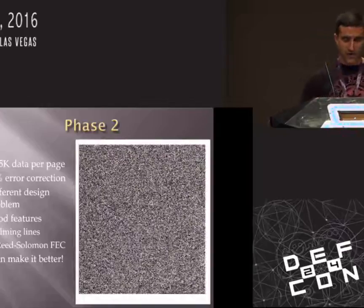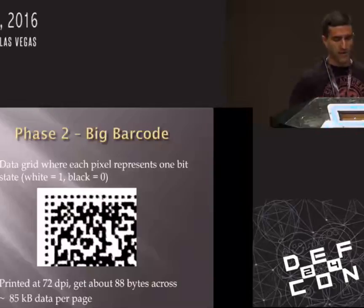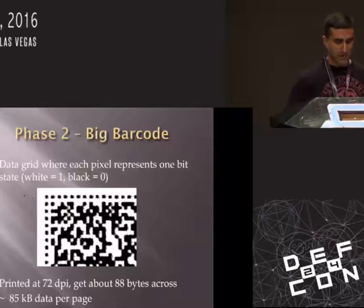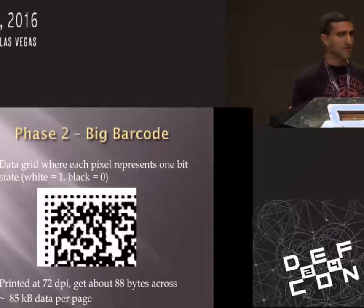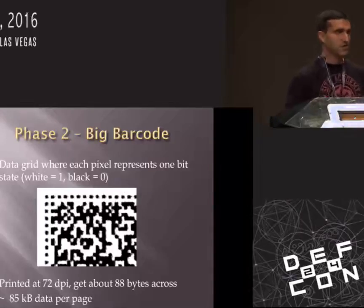I took features from those barcodes — timing lines to help locate data and some forward error correction — but decided I could make it better for my purposes. Lo and behold, I generated an 8.5-by-11-inch big barcode. I can get about 85 kilobytes of data per page. Zoomed in, it has timing lines on all four sides and data — I call it the 'data meat' — in the middle. Printing at about 72 dots per inch, I can get about 88 bytes of information across a single pixel line.